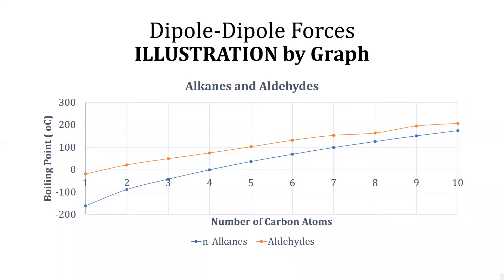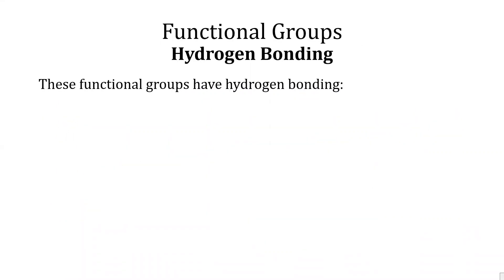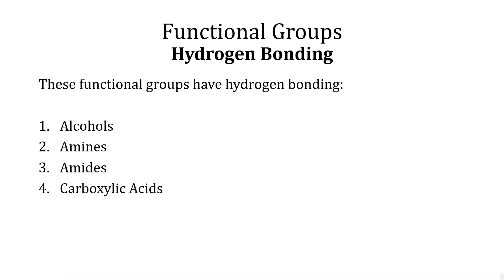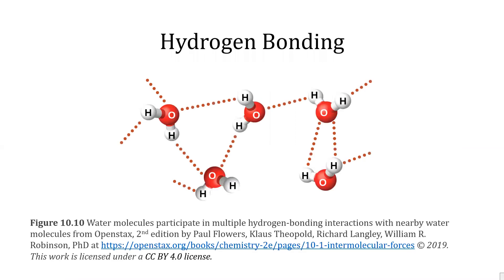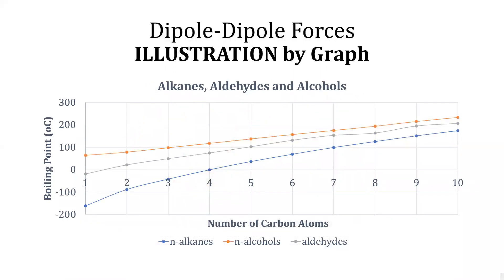Aldehydes have higher boiling points over alkanes because they have the stronger attractive force of dipole-dipole over alkanes with only London dispersion forces. Functional groups that have hydrogen bonding include alcohols, amines, amides, and carboxylic acids. This illustration shows water molecules attracting with other water molecules. Hydrogen bonding requires N–H, O–H, or H–F bonds to be present.